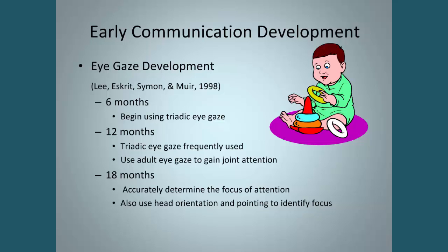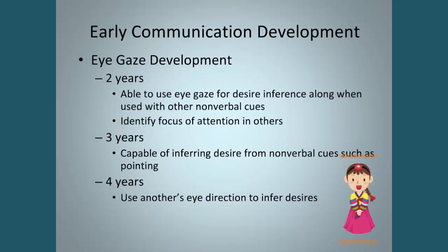By 18 months, they also use head orientation and pointing to identify focus of attention. By two years of age, they're able to use eye gaze for desire inference along with other nonverbal cues, such as gesture, and they identify the focus of attention really accurately in others. By three years, they're capable of inferring desire from nonverbal cues such as pointing. By four years, they can use another's eye direction to infer desires.